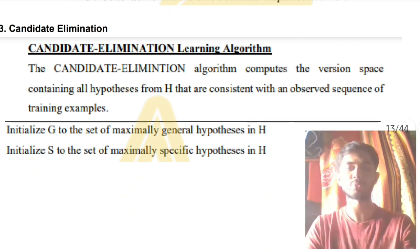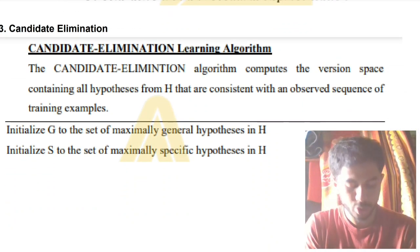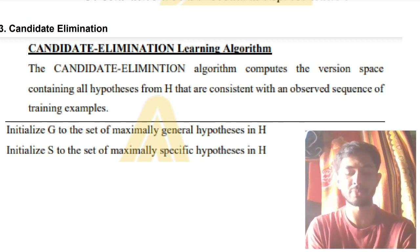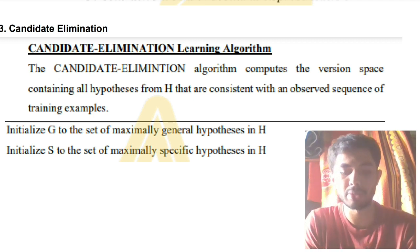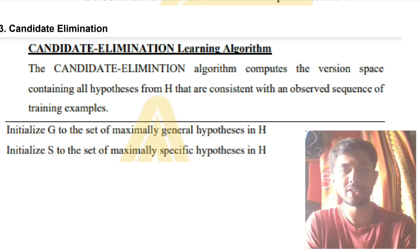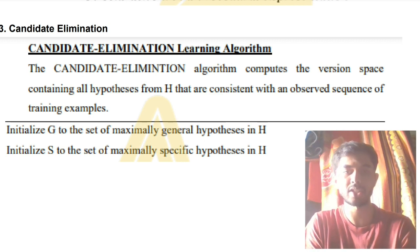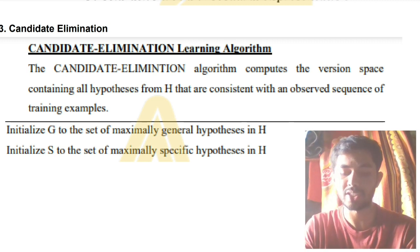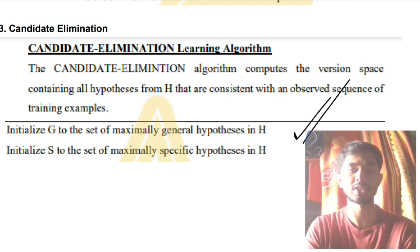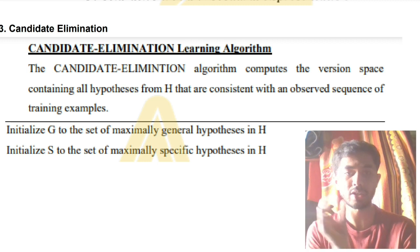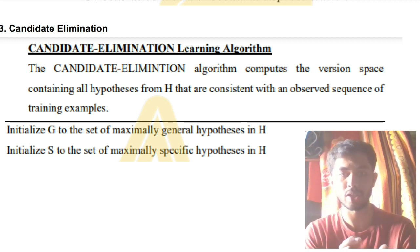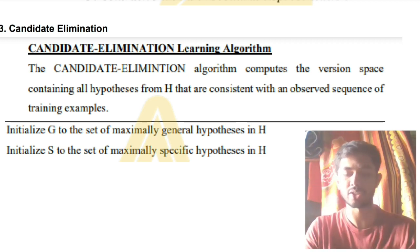Moving on to the third super important question: candidate elimination. You may get a numerical for this — you'll be given a table and have to find the most general and most specific hypothesis. I'll discuss that in a separate video. Here I'll cover the theoretical concept. The candidate elimination algorithm is about having hypothesis spaces — a version space.